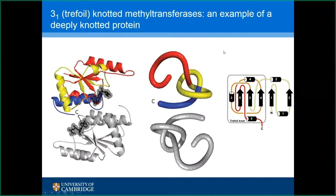Occasionally I'm asked what's the cut-off between a shallow knot and a deep knot — what number of residues? I don't think there's a threshold. With some proteins you only have four or five residues, and in other proteins you can get hundreds of residues. Personally I think the problem of how these fold is quite different between shallow and deeply knotted protein structures. I'm not going to talk that much about folding today, but if anyone's interested, I'm always happy to answer an email or have a Skype discussion.